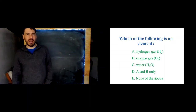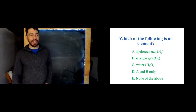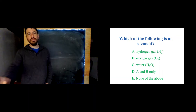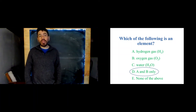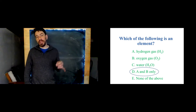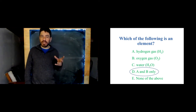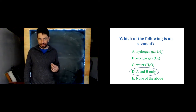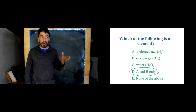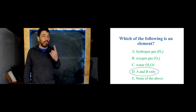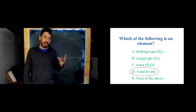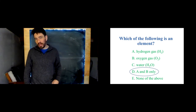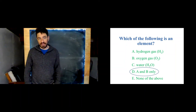Which of these is an element: hydrogen gas, oxygen gas, water, possibly A and B, or none of the above? The correct answer is A and B. Both hydrogen gas and oxygen gas are elements because they're only made of a single type of atom. Water is a molecule but it's a compound, whereas hydrogen gas and oxygen gas are molecules but they're elements. Just because something's a molecule doesn't make it a compound — that's a misconception many students have.